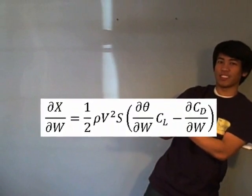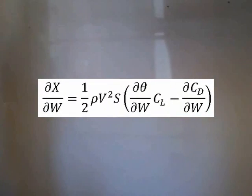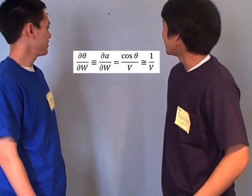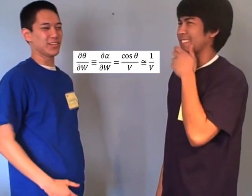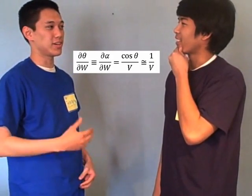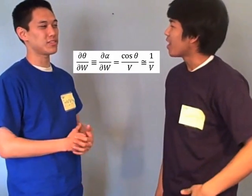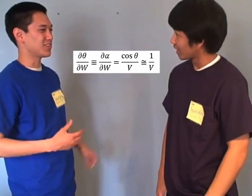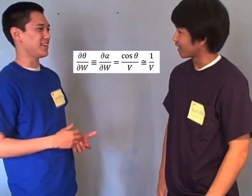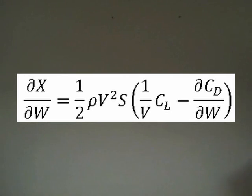Now we're left with this. But what is that d theta over d w, Drew? Well, Daniel, d theta d w is the change in flight path angle with respect to the change in normal velocity, which is also equal to cosine theta over b. But cosine theta equals one, so cosine theta over b becomes one over b. Thanks, Drew. Okay, I get it — that first term is one over b times c l.